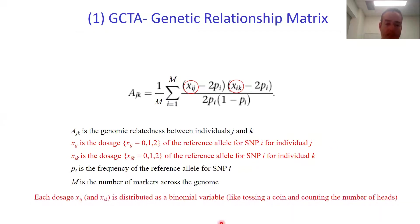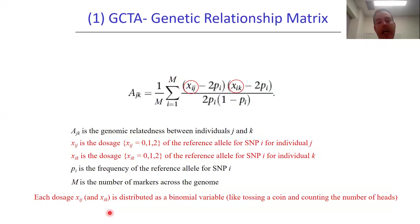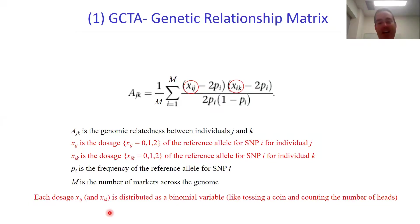Each of these dosages — 0, 1, or 2 — is distributed like a binomial variable. A binomial variable is like tossing a coin and counting the number of heads or successes. In this case, each genotype consists of two trials, so two alleles, and we're counting the number of reference alleles — the number of successes in those two alleles — which can be 0, 1, or 2 for each genotype.